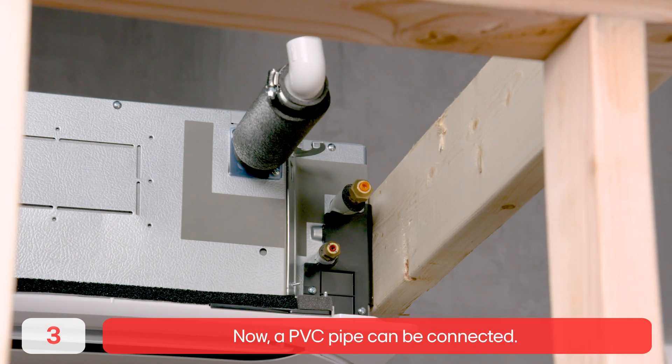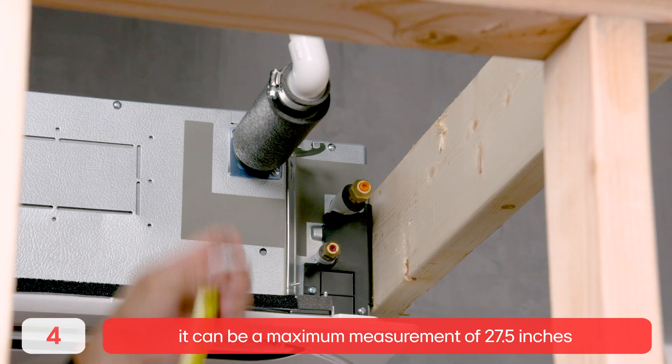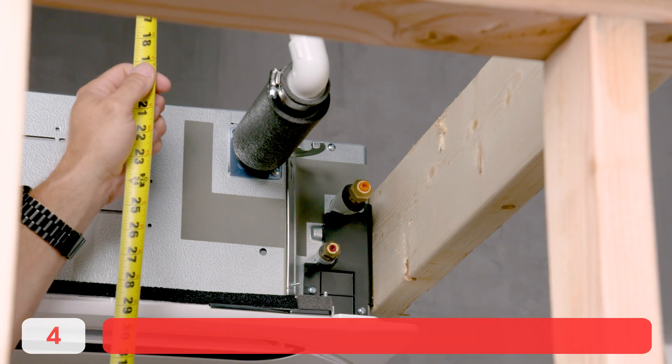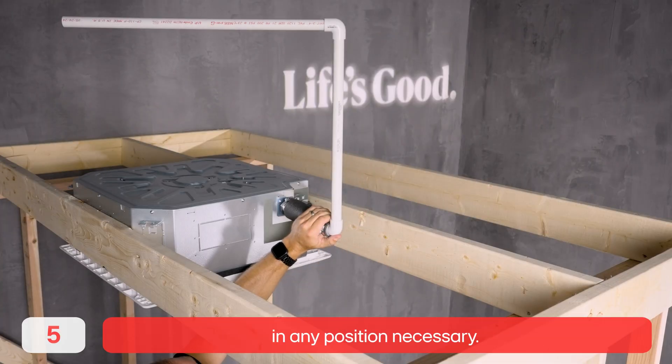Now, a PVC pipe can be connected. Going up from the 90 degree angle, it can be a maximum measurement of 27.5 inches from the bottom of the unit. Once connected, the PVC can be oriented in any position necessary.